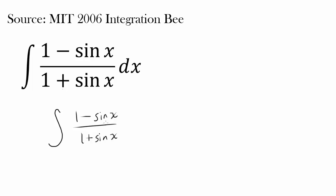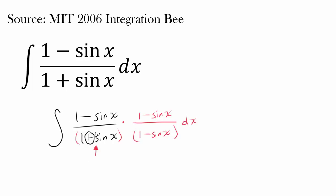One way of attacking this is by multiplying this fraction by (1 minus sine of x) over (1 minus sine of x). You may wonder how this is helping us. Well, since we have (1 plus sine of x) in the denominator, that plus is making the evaluation of this integral very hard.